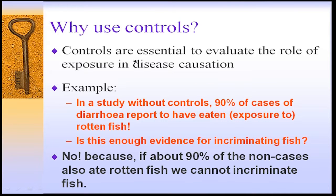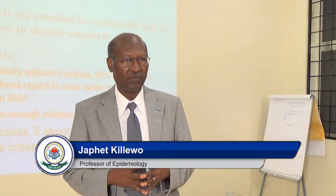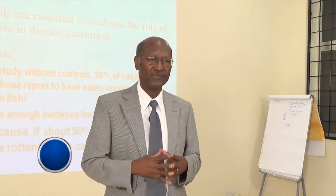Why do we use controls in case control studies? Controls are essential to evaluate the role of exposure in disease causation. For example, in a study without controls, 90% of cases of diarrhea report having been exposed to rotten fish. This is not enough evidence for incriminating fish, because it can also happen that 90% of the non-cases also ate the rotten fish. So controls are essential for evaluating the role of exposure in disease causation.